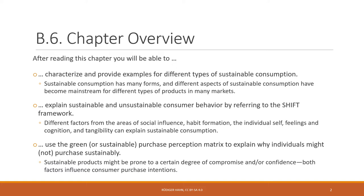You'll be able to explain sustainable and also unsustainable consumer behavior by referring to the so-called SHIFT framework. This framework differentiates various factors: S for social influence, H for habit formation, I for the individual self, F for feelings and cognition, and T for tangibility. All these factors can explain sustainable or unsustainable consumption, and you'll learn how that is the case.